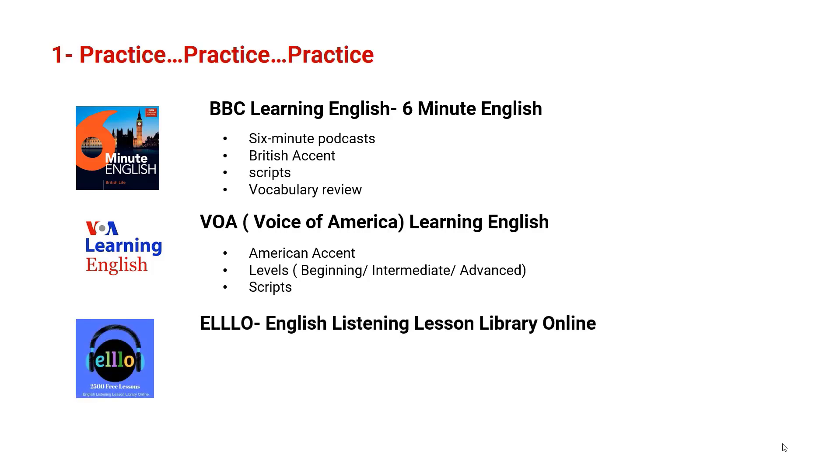The third website is ELLLO or English Listening Library Online. This website has international speakers. Therefore, you will listen to different accents such as British, American, Australian, Indian, and more. And the nationalities of the speakers are shown via flags next to each podcast. There are also three levels to choose from: beginner, intermediate, and advanced. Unlike 6 Minute English and VOA, ELLLO has a script for each podcast. And the good thing here is that new words and expressions are written in a different color, in blue.